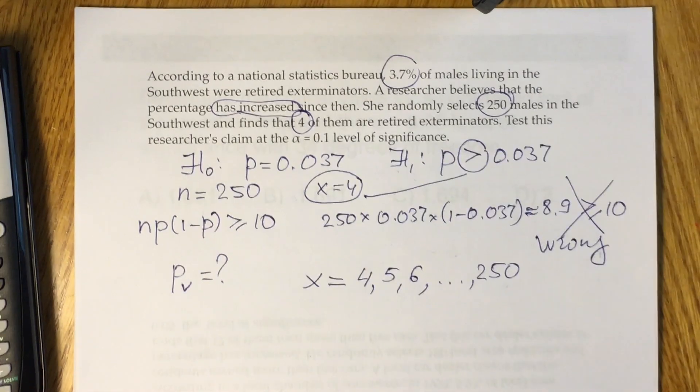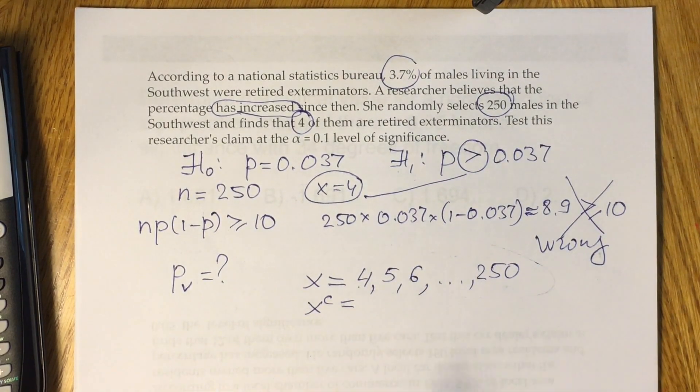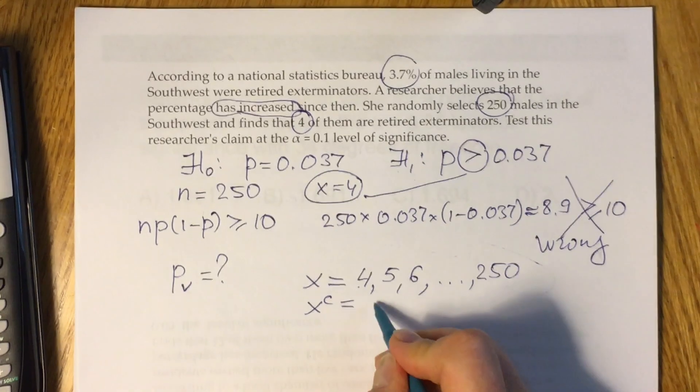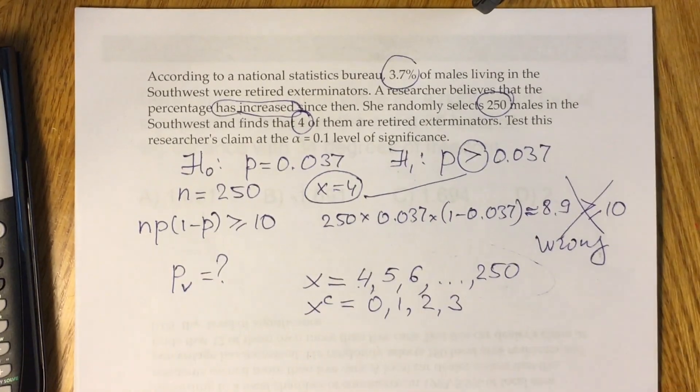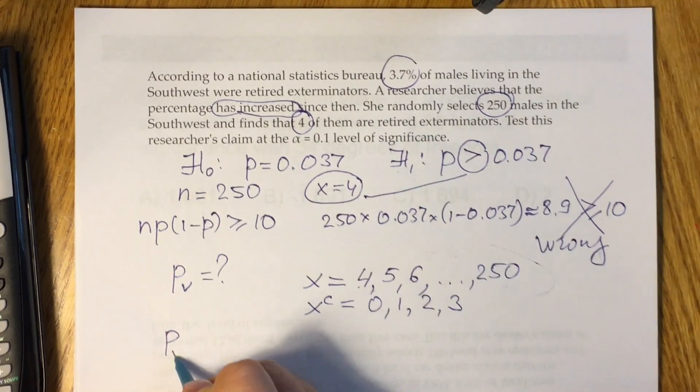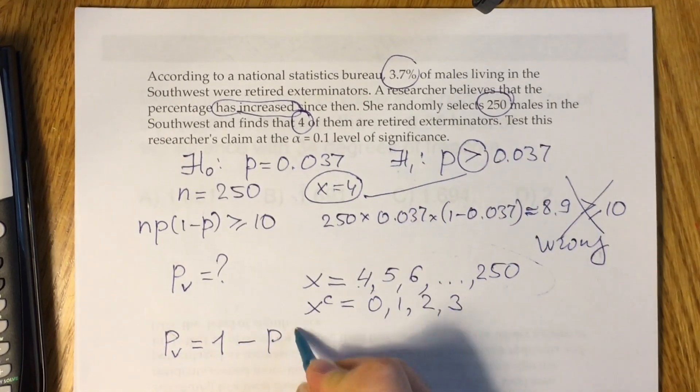So what to do in this case? You can write complement. Complement is everything not included in the sequence for x. What is not included? 0, 1, 2 and 3. As usual, working with the complement, we can claim that our probability we are looking for would be 1 minus probability of the complement.